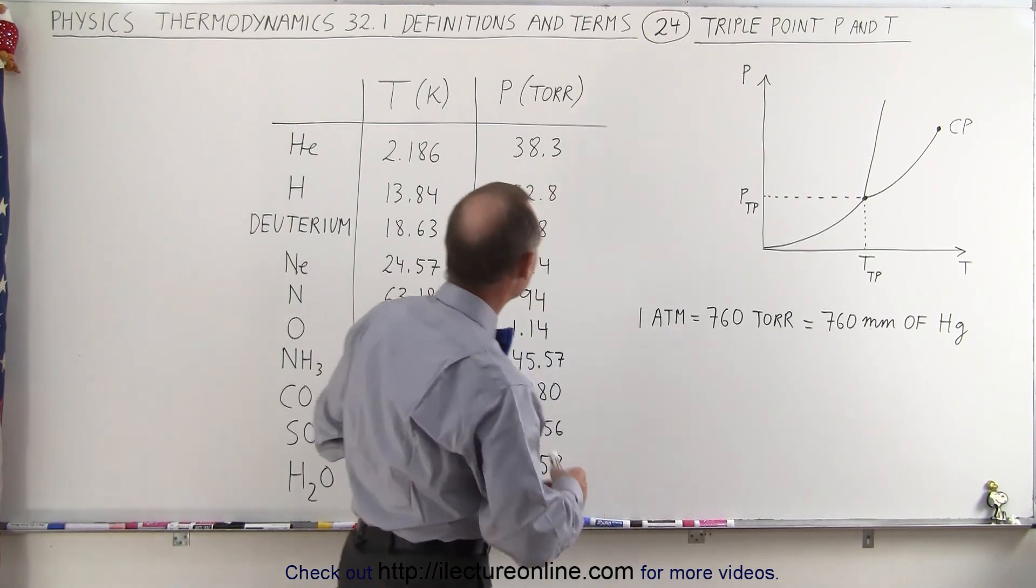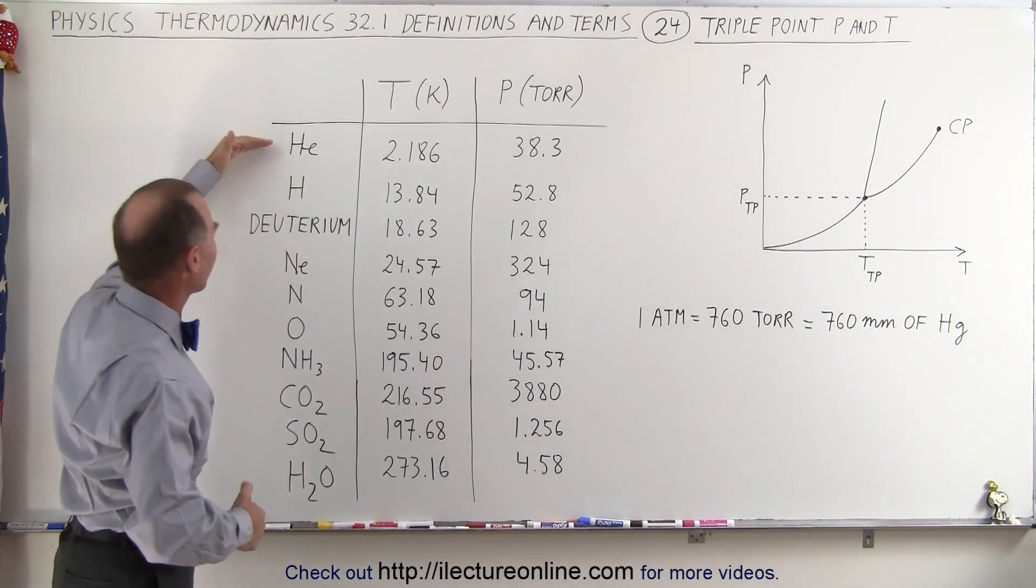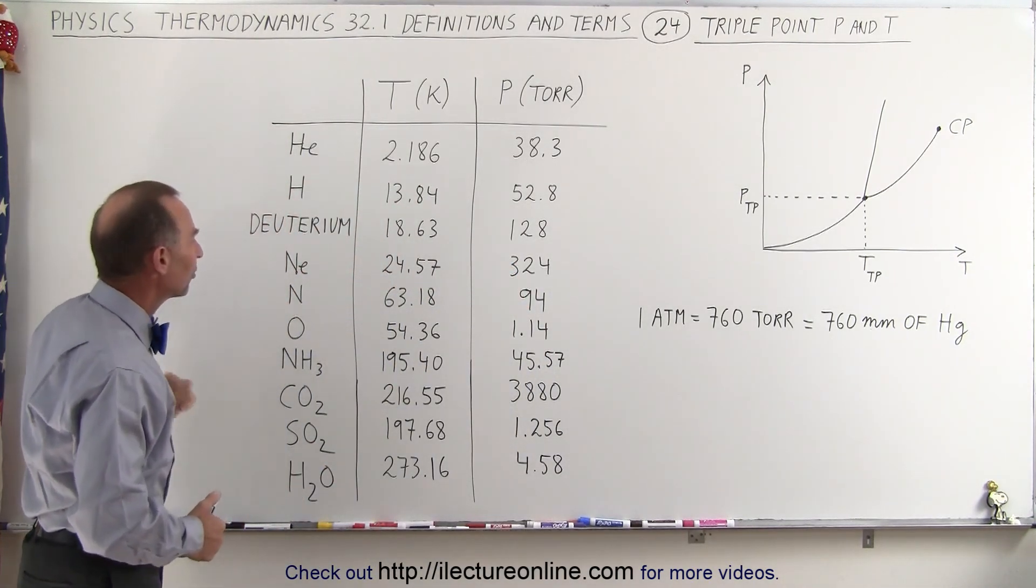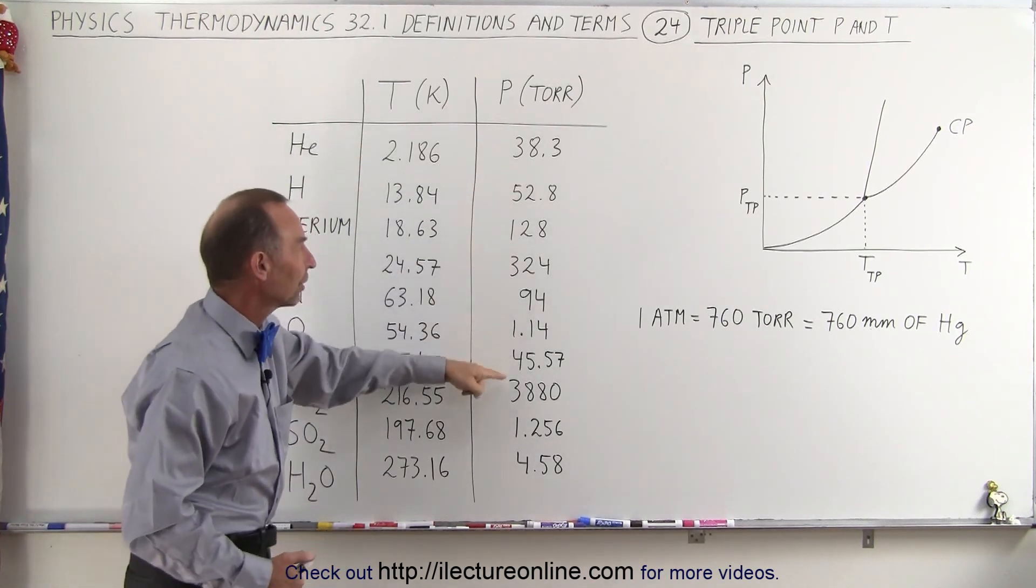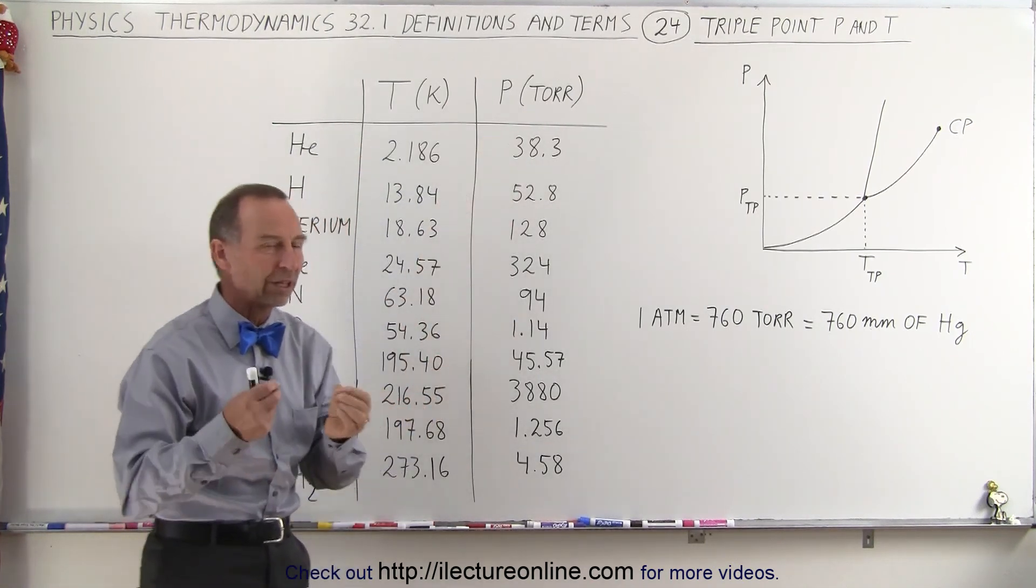Now, if we take a look at the table here, we can see that for a fair number of very common substances, we have the temperature and the pressure in tor associated with that triple point.